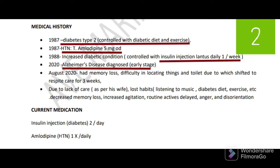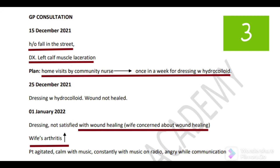The current medications given are insulin injection, Vitamin D, and amlodipine for hypertension once daily. Next, they have given GP's consultation - the scenario starts on 15 December 2021. There is a history of a fall in the street, so he had to go for a GP consultation. You will get confusion because this GP consultation has been given.